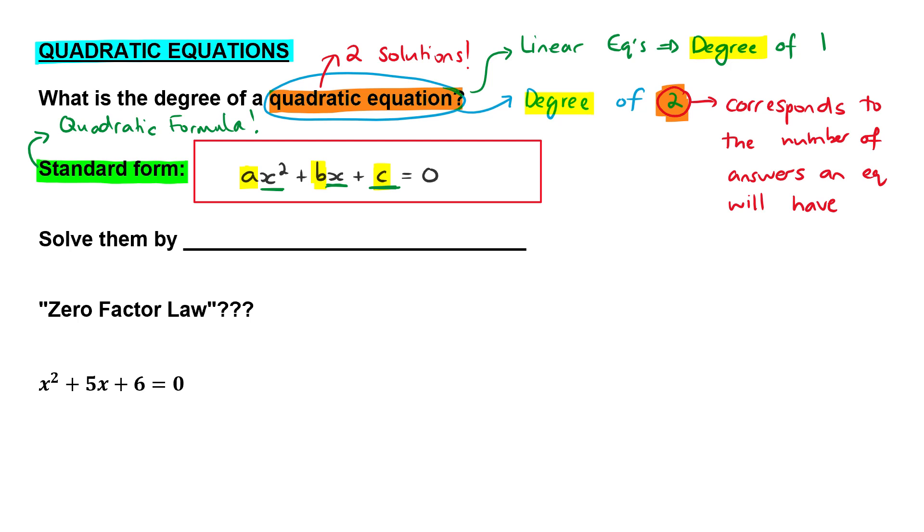The second thing to remember is that on one side of the equals, we always have a zero. So you need that zero on one side of the equals. And the reason that that's so important is because of something we call the zero factor law. And I'll come back to that in a second.